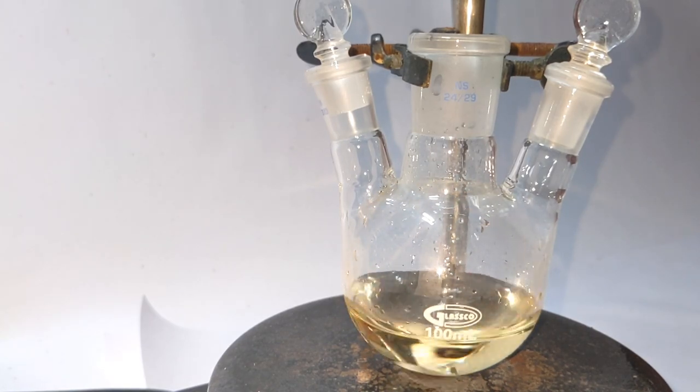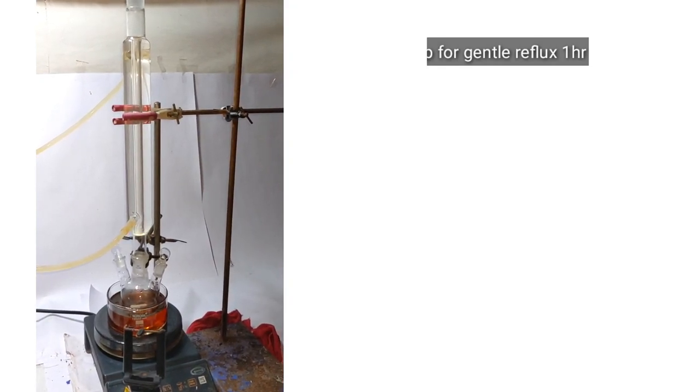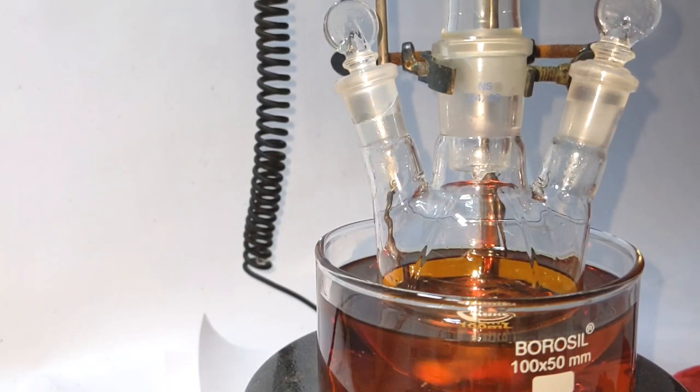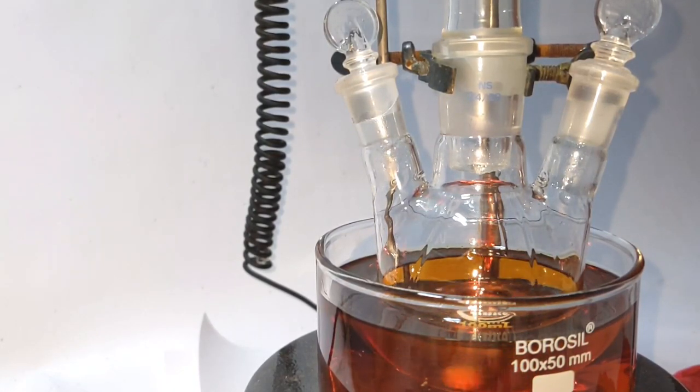The two side necks of the three-neck round bottom flask were stoppered and a reflux condenser was placed on the middle neck. The mixture was set to a gentle reflux on an oil bath for one hour.